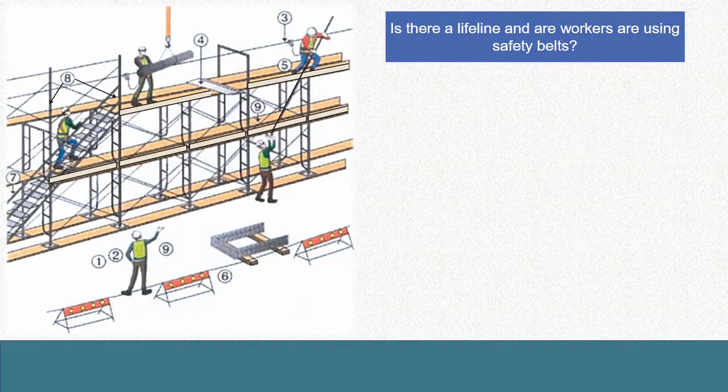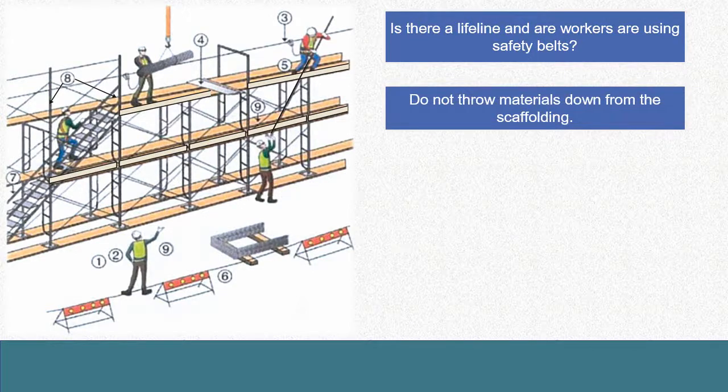In disassembling work, lower single tube pipes by passing them by hand to the person below you. Always pass by hand when engaging in this work. When the pipes are heavy, use machinery to lower them.